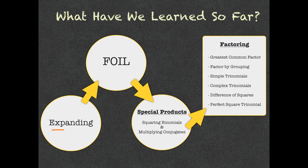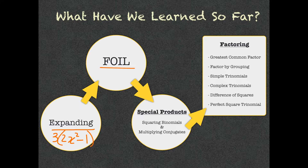We began the unit by reviewing how to expand, which is really a grade 9 concept — it's when you have a number outside the bracket and you distribute it to everything inside the bracket, basically the distributive property. The new topic we learned in this unit was FOIL, which is another type of expanding but specific to when you have two binomials, like (2x − 1)(3x + 2).